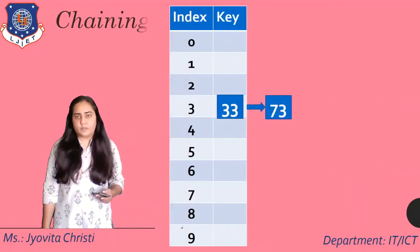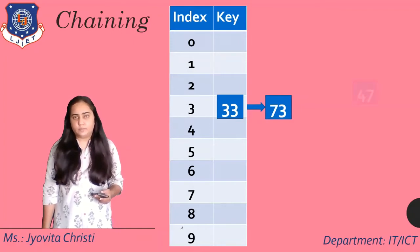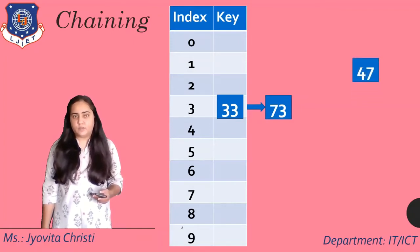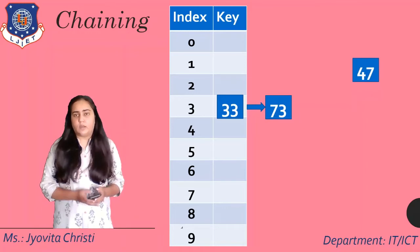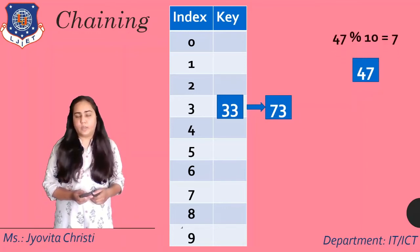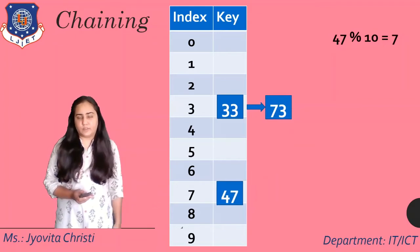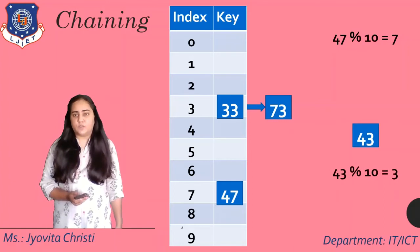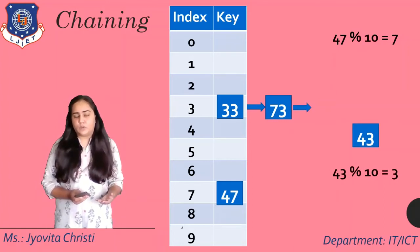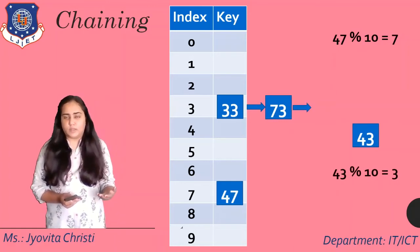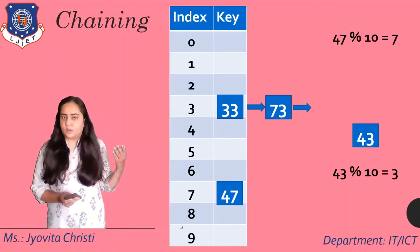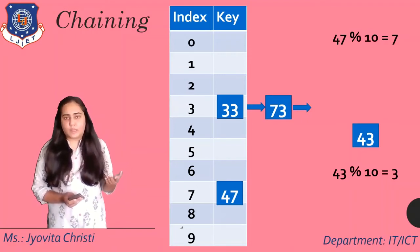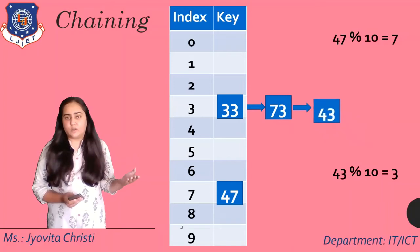So let's say that next I have another key 47. So I can do 47 modulo 10, which gives me seven. So 47 will get stored in position seven. And if I have 43, I can do 43 modulo 10, which gives me three. And so because it's a collision, again, I can create a longer chain in bucket three and store 43 over there.